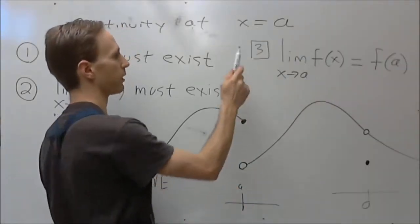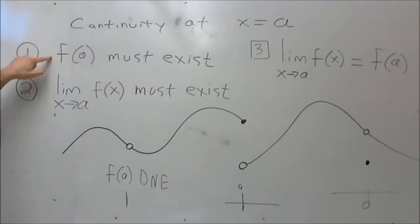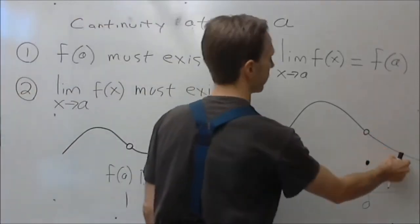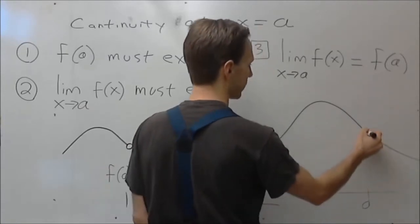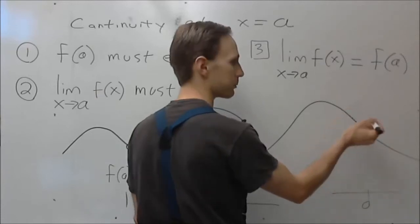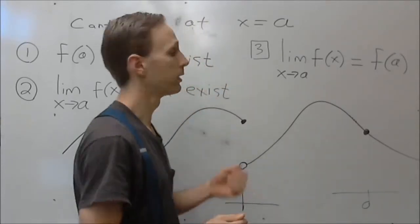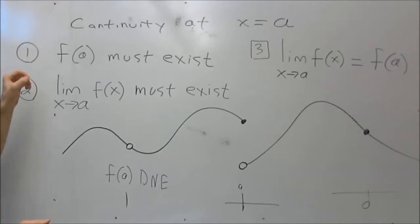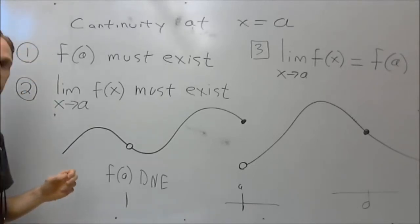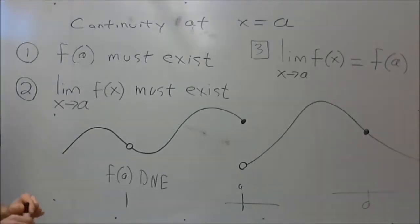The third condition is that the limit as x approaches a must equal f of a — these two answers must be the same number. If you fill in the dot so the pieces match, then and only then do you have continuity at that point. You need all three conditions; knowing only one or two is not enough to conclude the function is continuous.